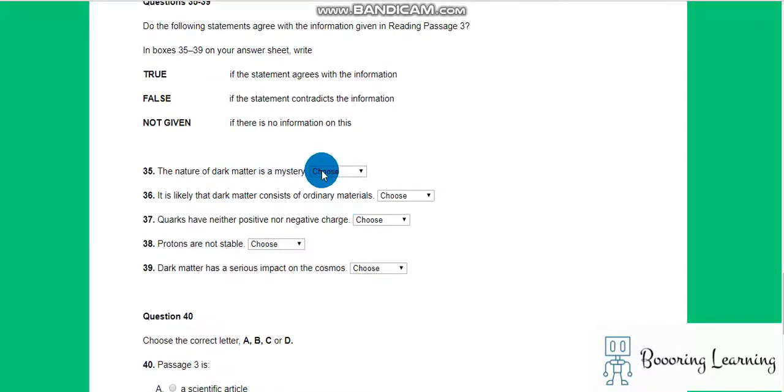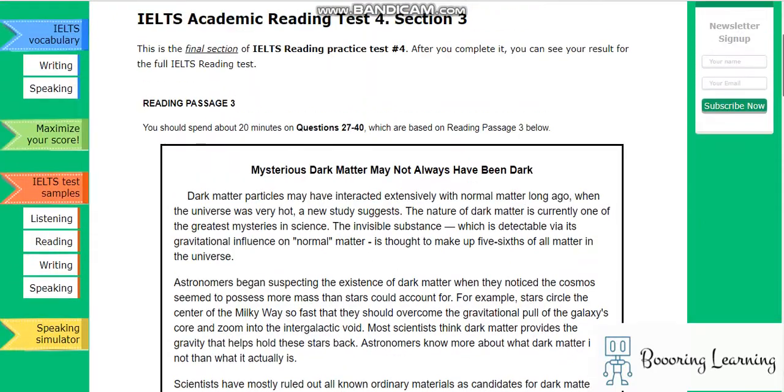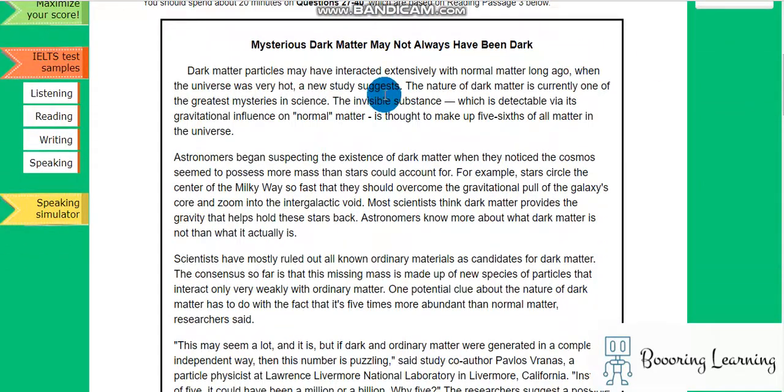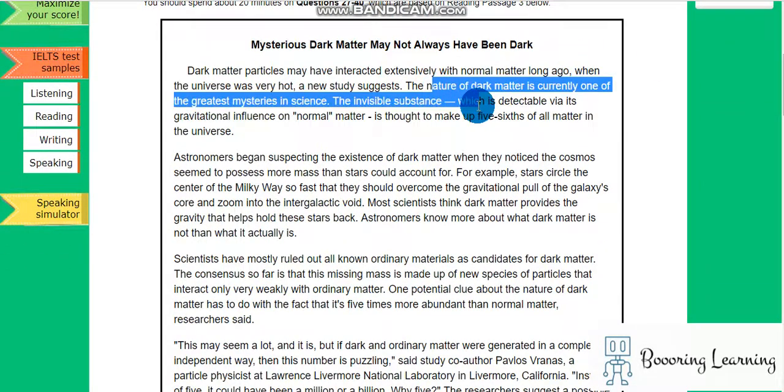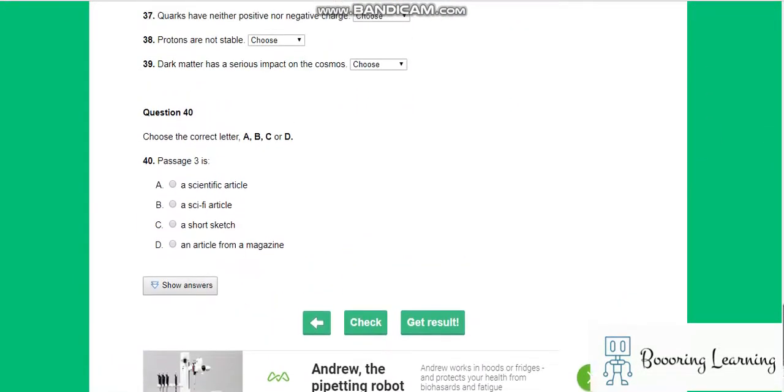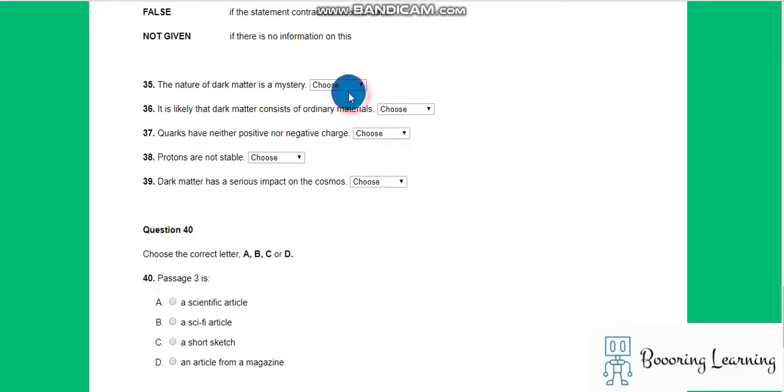Question 35: The nature of dark matter is a mystery. It is in the first paragraph. The nature of dark matter is currently one of the greatest mysteries in science. Yes, it is enough to say that it is a mystery. It is true.